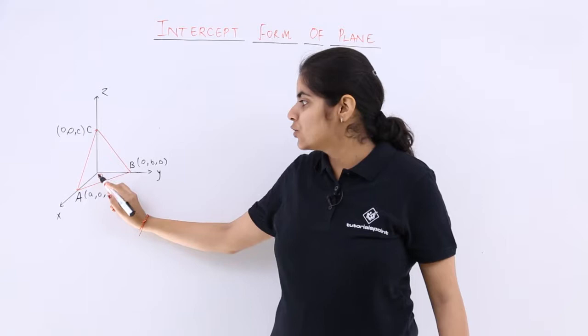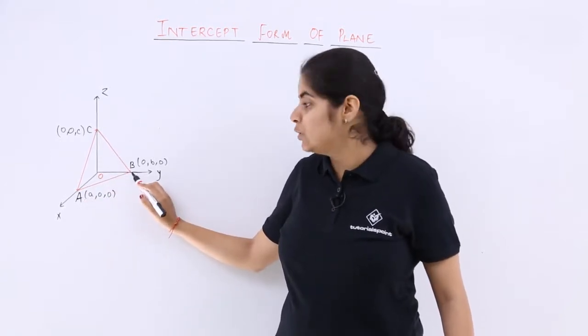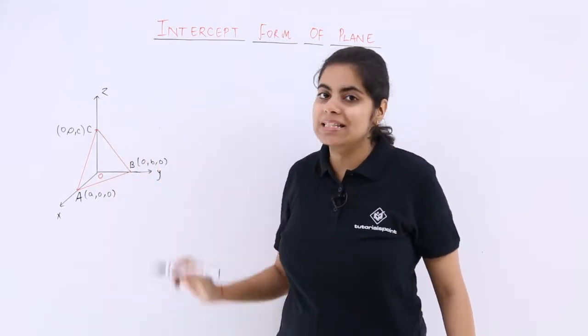As you can see, O is the origin. The intercept made on the x-axis is A units, the intercept on the y-axis is B units, and the intercept on the z-axis is C units.